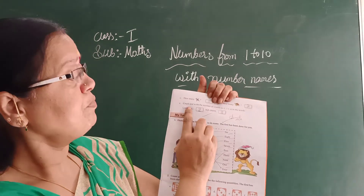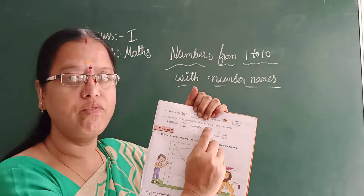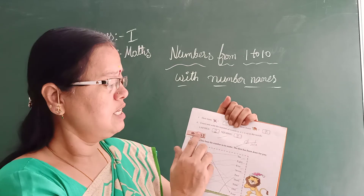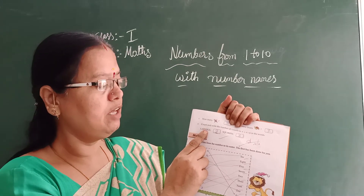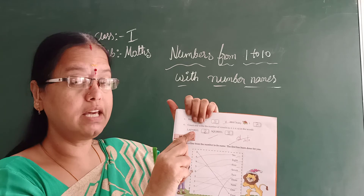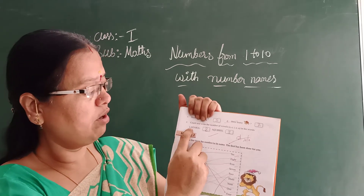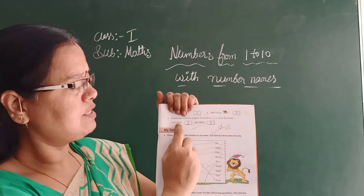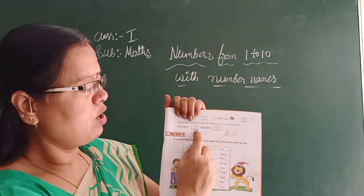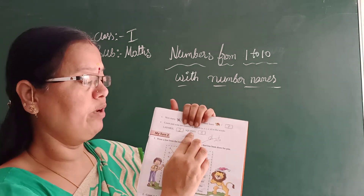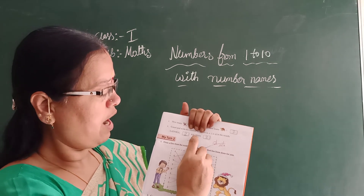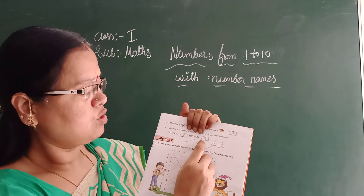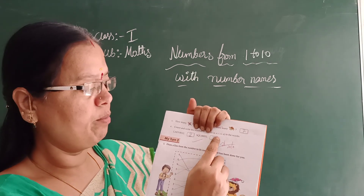And finally, count and write the number of vowels. Do you know vowels in English? The vowels are A, E, I, O, U. These are the vowel letters. So here — ladybug: L-A-D-Y-B-U-G — A is a vowel and U is a vowel, so how many vowels are there? 2. Write 2 in the box. In squirrel — S-Q-U-I-R-R-E-L — U, I, and E are vowels, so 3 vowels. You have to write in the box how many vowels are in each word.